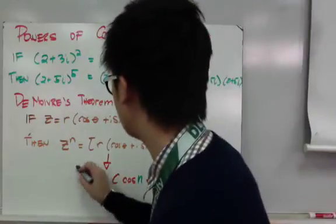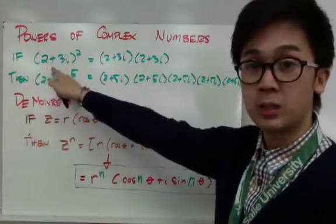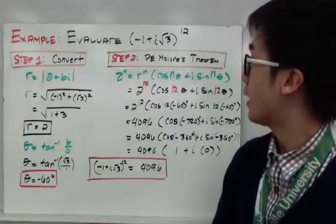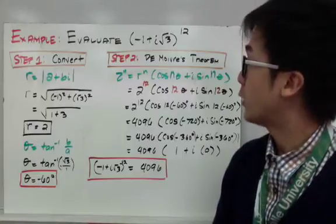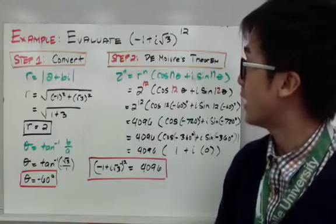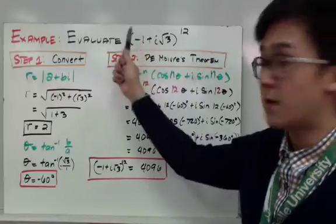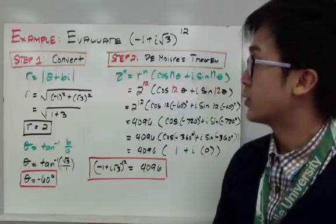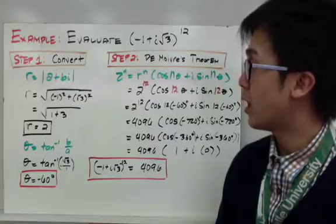And this is what we're going to use to simplify a complex number raised to a power. In our first example, we're going to raise negative 1 plus i square root of 3 to the 12th power. We're not going to manually multiply negative 1 plus i square root of 3 by itself 12 times. We're going to use De Moivre's theorem, so the first step is to convert our complex number to its trig form.